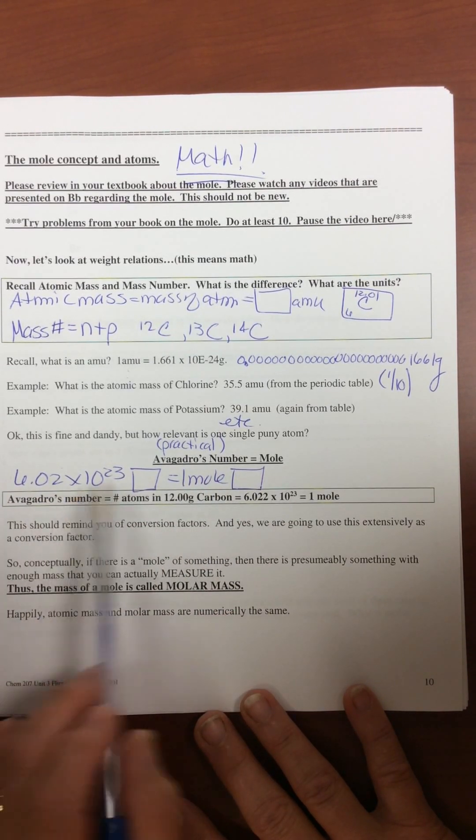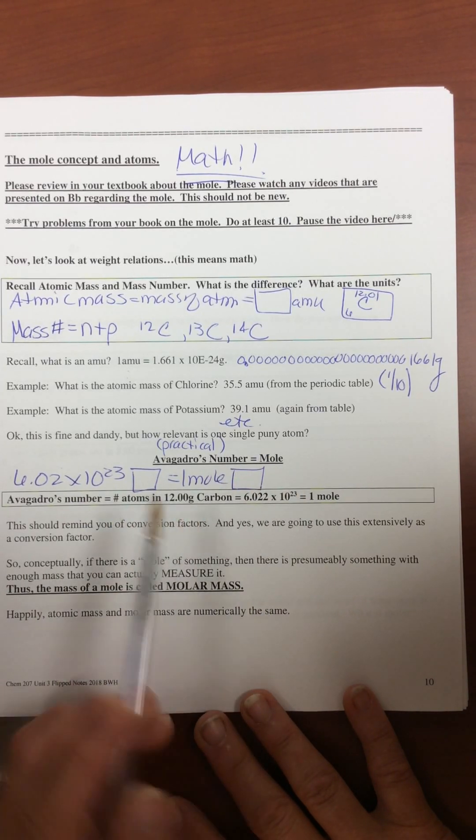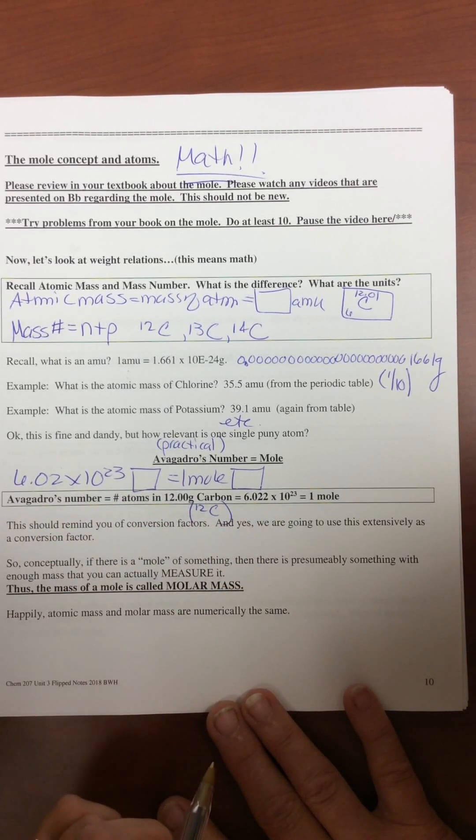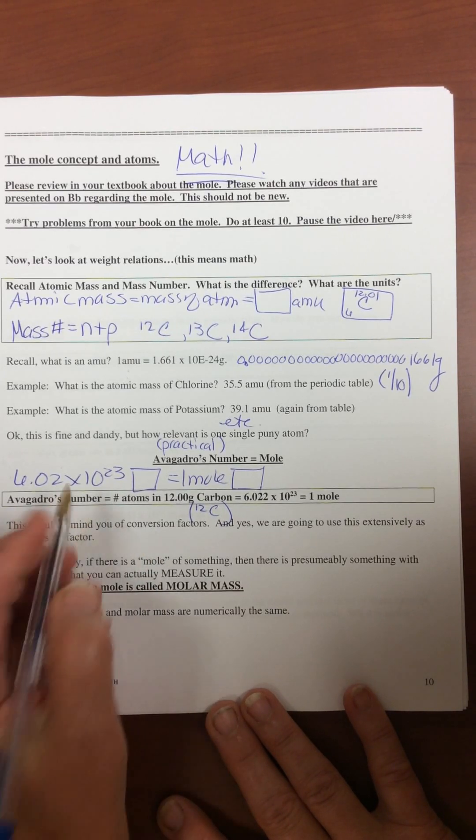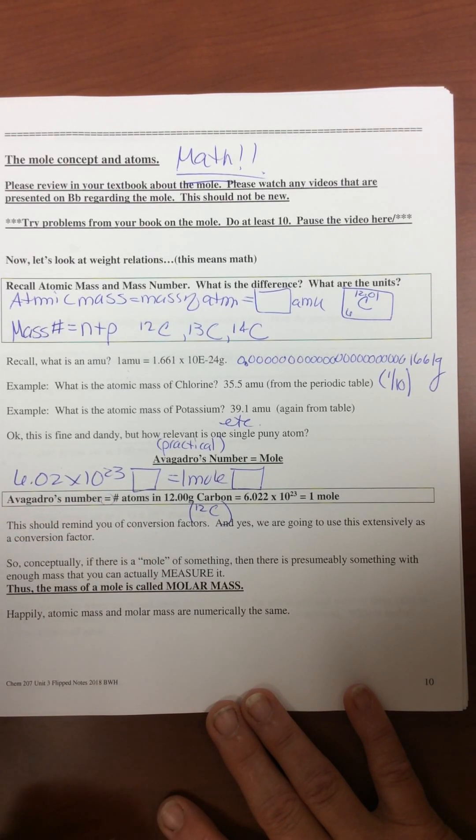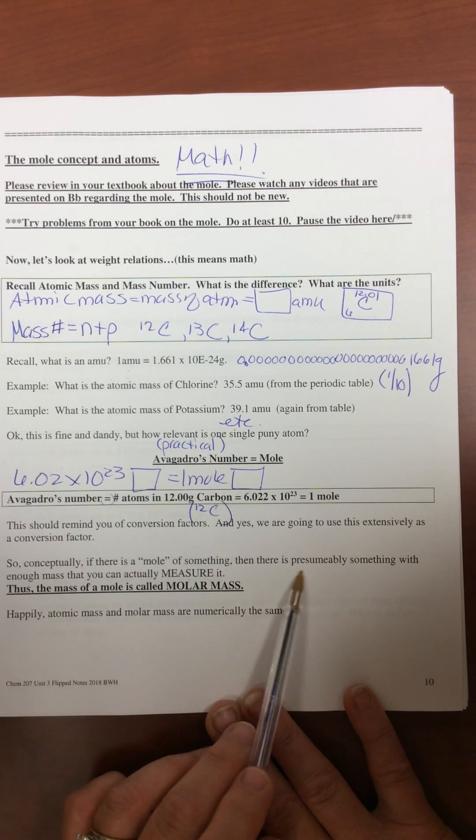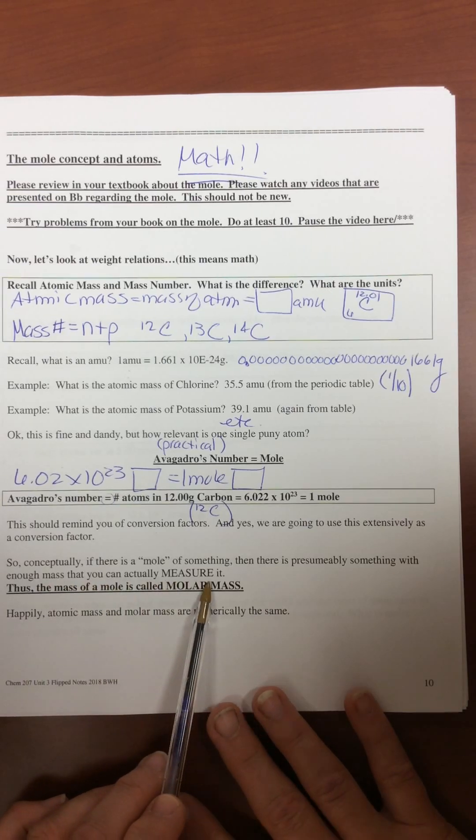So Avogadro's number is a mole and it's the number of atoms in 12.00 grams of carbon-12, 6.022 times 10 to the 23rd. And this should remind you of conversion factors. Any time you see any equality, it's a conversion factor. So conceptually, if there's a mole of something, then there is presumably something with enough mass that you can actually measure it.